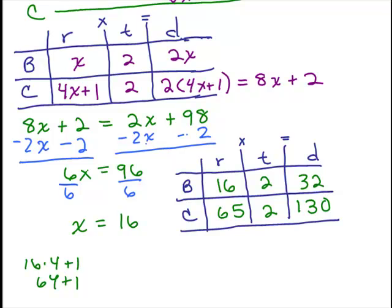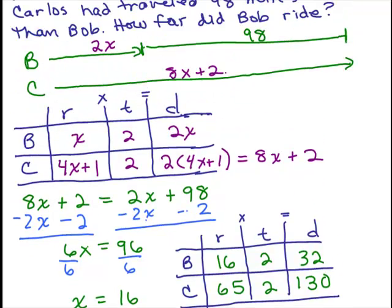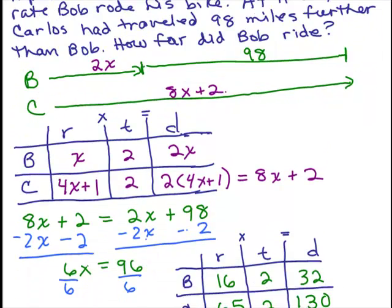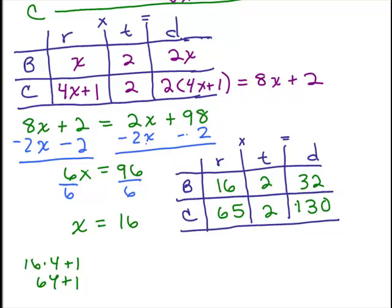Now we want to make sure that makes sense with the original problem. At 11 a.m., Carlos had traveled 98 miles further than Bob. Does this make sense? Carlos went 130 miles and Bob went 32. Did he go 98 miles more than Bob? Just take their difference and see what you get. Take 130 minus 32 and you can see that Carlos is 98 miles ahead.